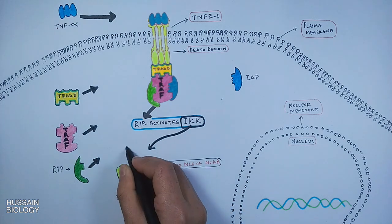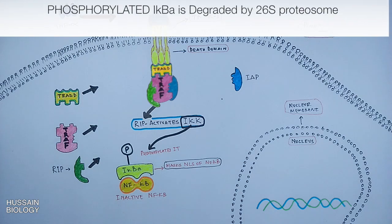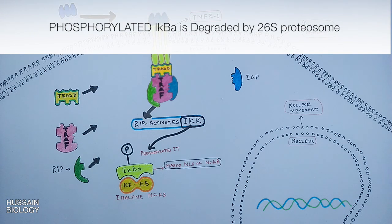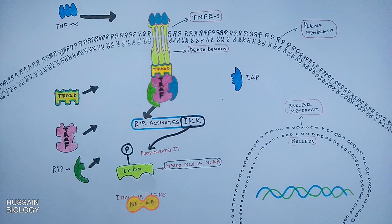This IKK phosphorylates the IκBα molecule. The phosphorylated IκBα will be degraded by proteasomes. Then the NF-κB molecule dissociates from IκBα molecule. So now the NF-κB molecule is free to go into the nucleus.